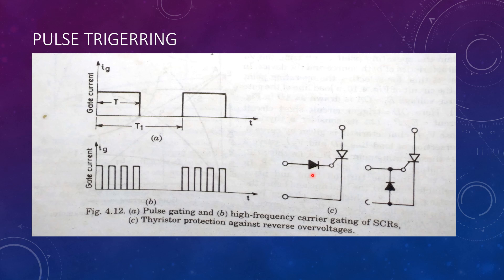Every manufacturer specifies the maximum reverse voltage that can be applied across the gate cathode junction. If this value is exceeded, the gate cathode junction can get damaged.